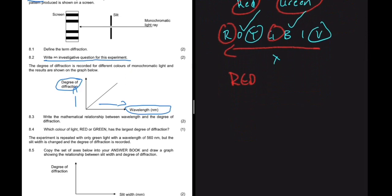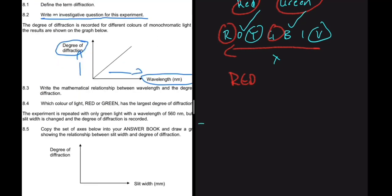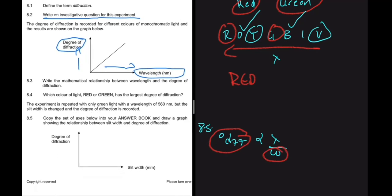Question 8.5: the experiment is repeated with green light at 560 nm but with varying slit width. The degree of diffraction is inversely proportional to the slit width — when slit width increases, degree of diffraction decreases. The graph should show a decreasing curve as slit width increases.